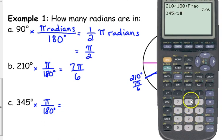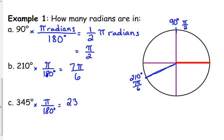345 over 180. Simplify it. That's 23π over 12. So, 345 would be right here. Any questions about the calculator or location or anything like that?